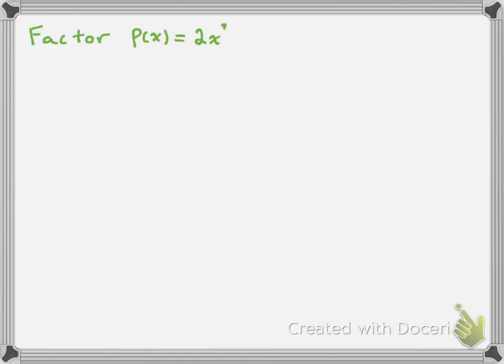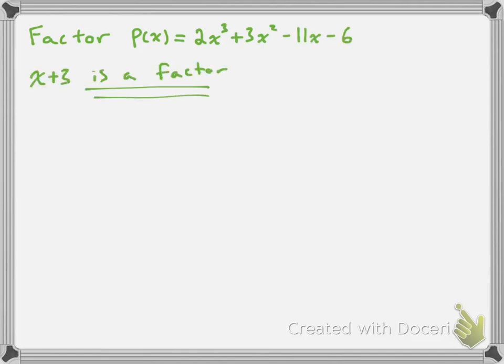So let's make a new page. We're still factoring p(x) = 2x³ + 3x² − 11x − 6, and we've found that (x + 3) is a factor. The next step is to divide the polynomial by (x + 3) using long division: (x + 3) into 2x³ + 3x² − 11x − 6.